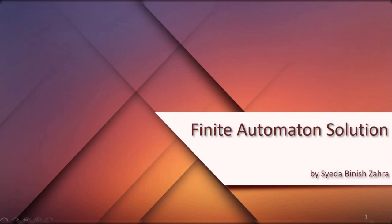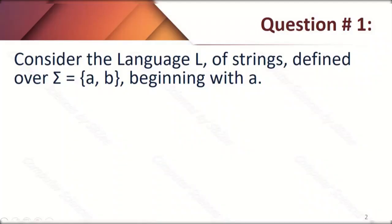This video lecture will cover finite automata Chapter 5 exercise solutions. Question number one: consider the language L of strings defined over sigma {a, b} beginning with 'a'.